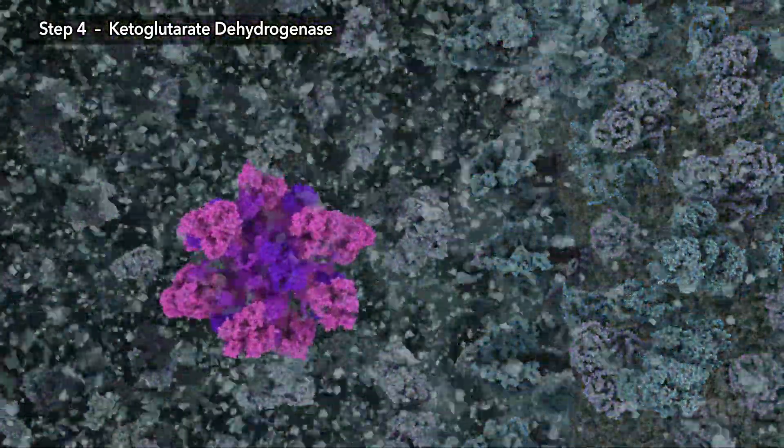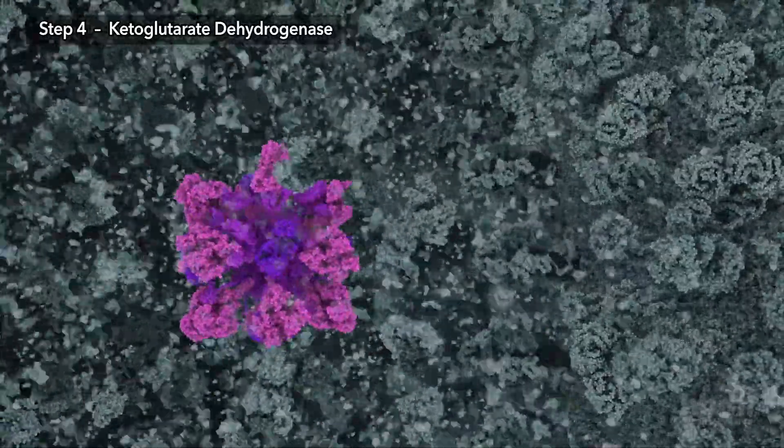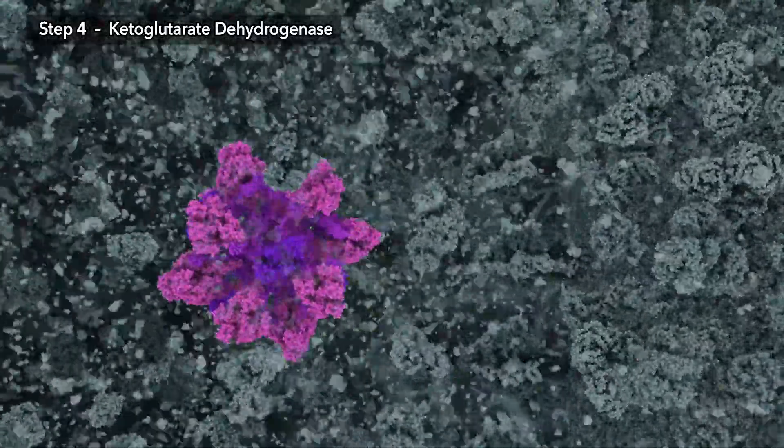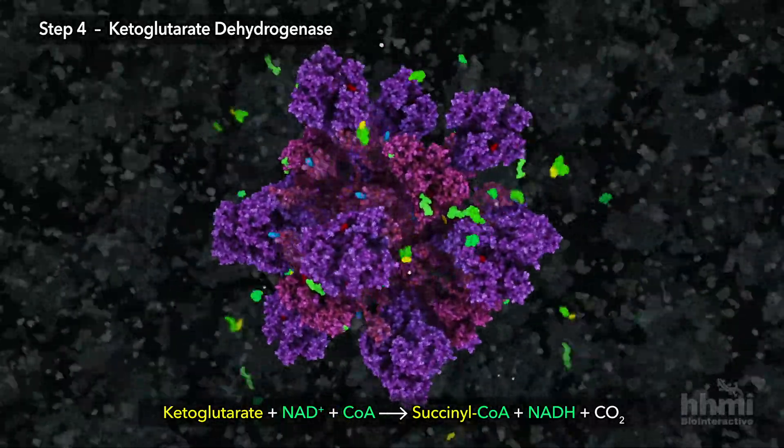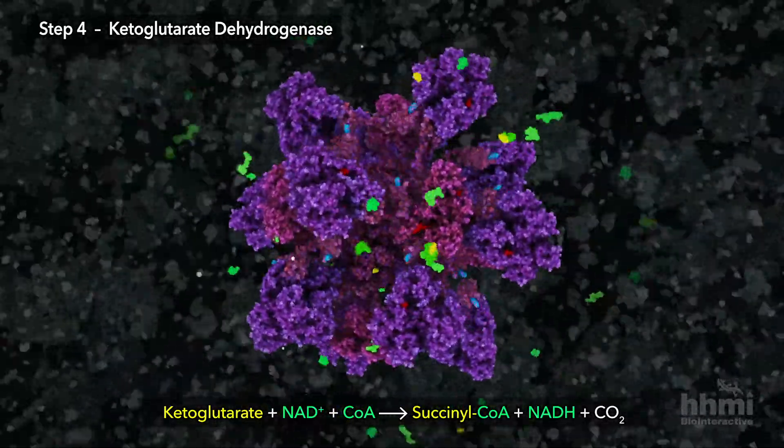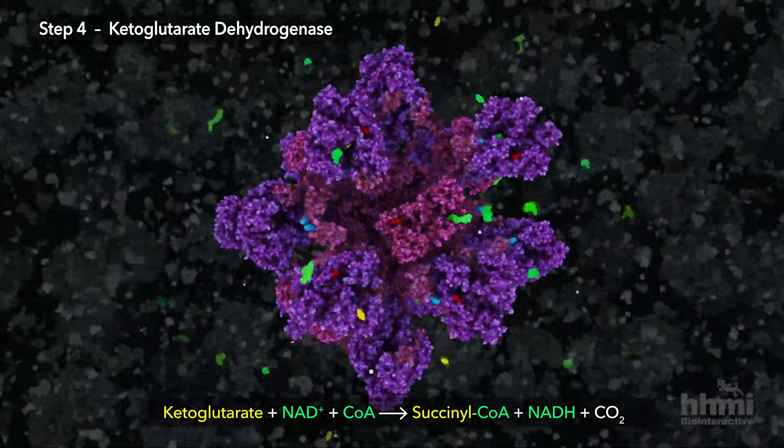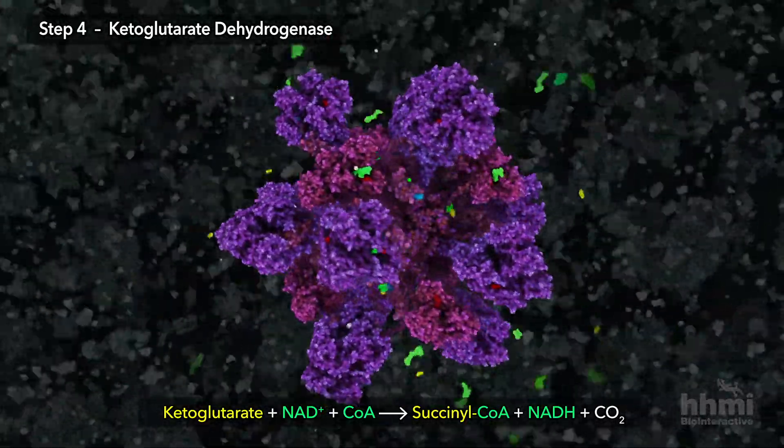Step four of the citric acid cycle is performed by a huge multi-enzyme complex, connecting multiple chemical reactions with flexible tethers, efficiently moving reactants between active sites and diverting electrons between pathways.